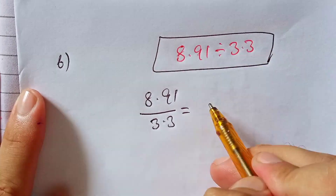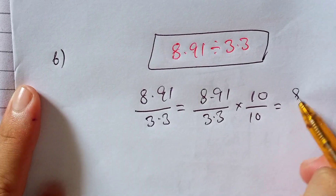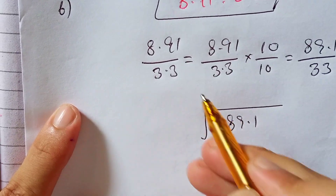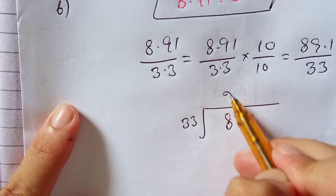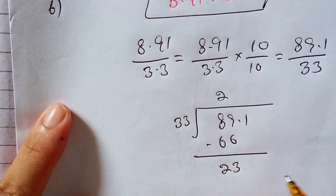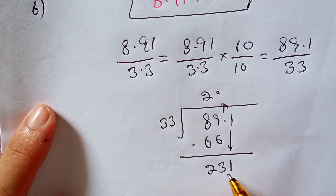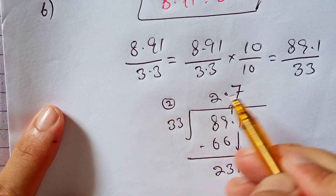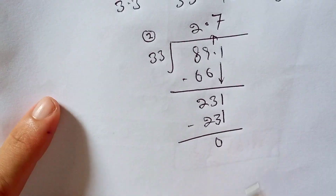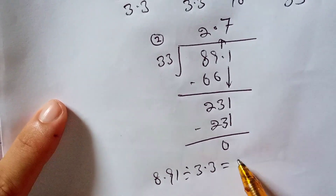In this question we have to divide 8.91 by 3.3. So 8.91 divided by 3.3, multiplied by 10, equals 89.1 divided by 33. How many times does 33 go into 89? 33 times 2 is 66. Subtract 66 from 89, the remainder is 23. Carry the decimal point and bring down the 1 to make 231. 33 times 7 is 231. Subtract 231 from 231, the remainder is 0. So 8.91 divided by 3.3 equals 2.7.